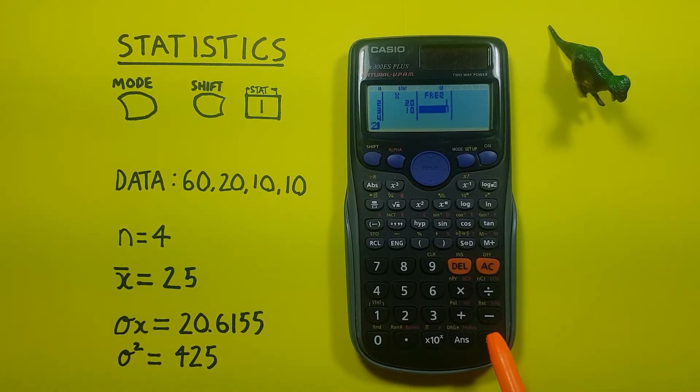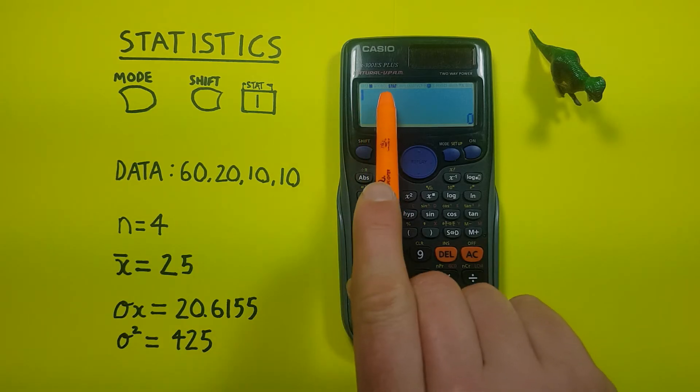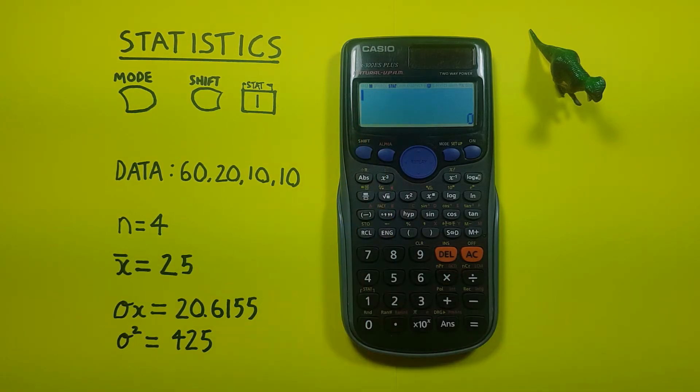2 and equals. We're now telling the calculator that 10 occurs twice. All right, our data has now been entered and we can press AC to clear our screen. Notice we have the word stat at the top of our screen here. That lets us know we're in statistics mode, so be aware of that. If you're getting some weird answers or weird results, that might have something to do with it.